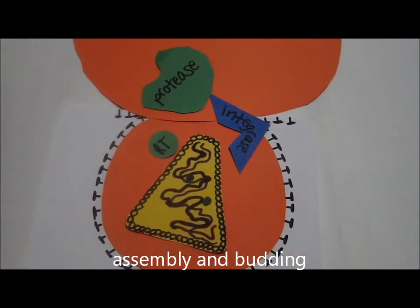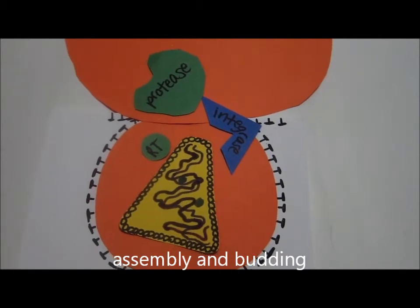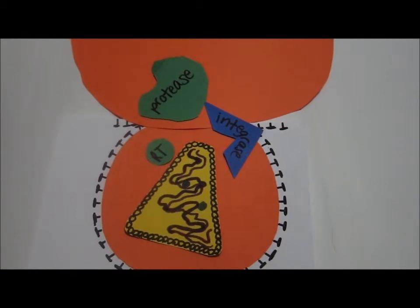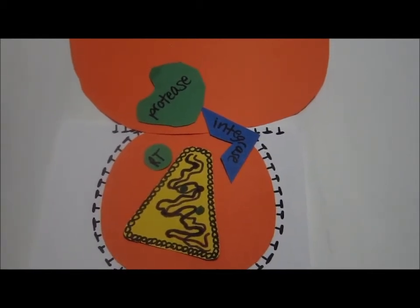Vesicles transport the glycoproteins to the plasma membrane. Capsids surround the viral genome and reverse transcriptase. The new virus then exits the lymphocyte.